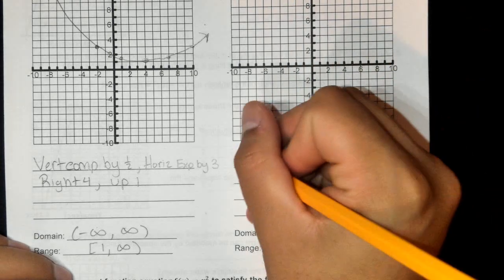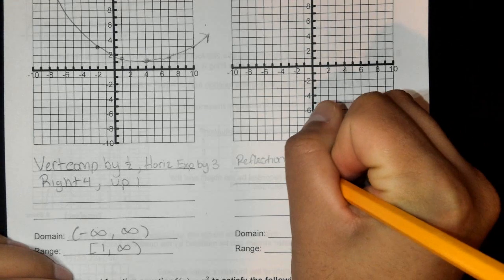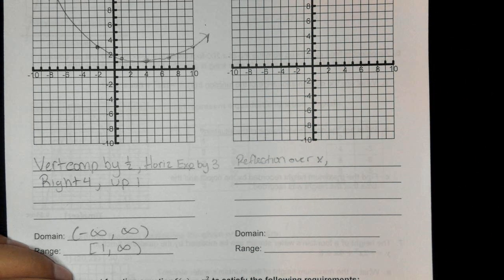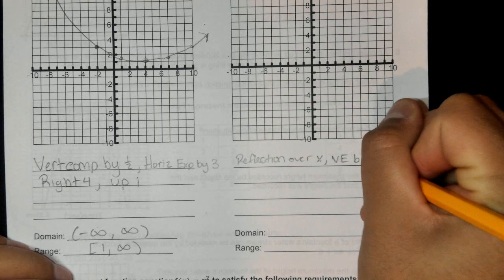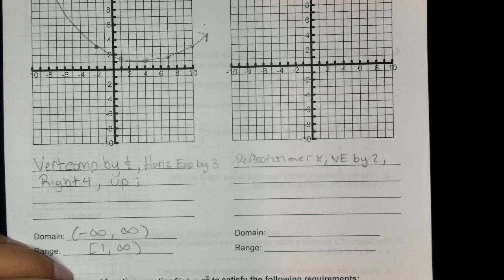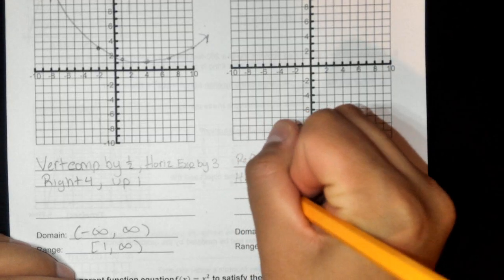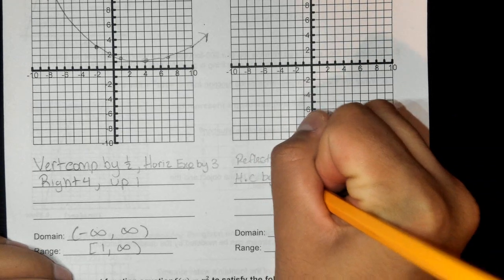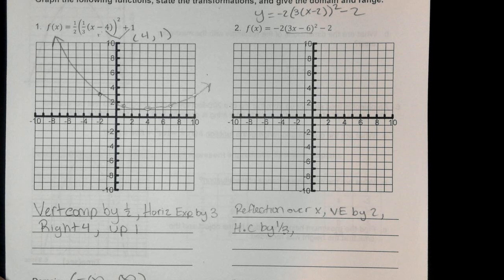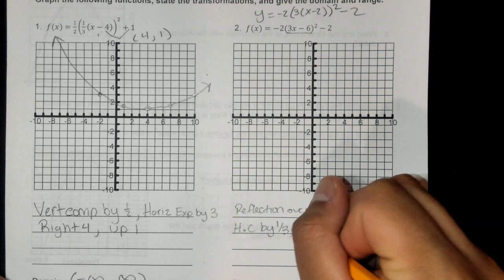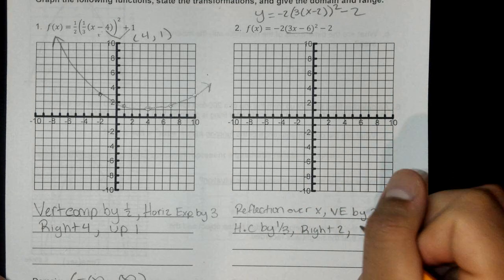For the transformations: we have a reflection over the x-axis, a vertical expansion by 2, the 3 on the inside gives a horizontal compression by one-third, the x minus 2 on the inside tells us to move right 2, and then we go down 2.